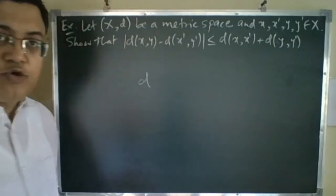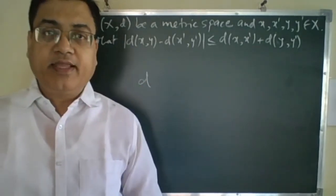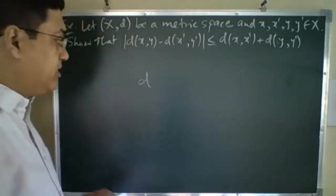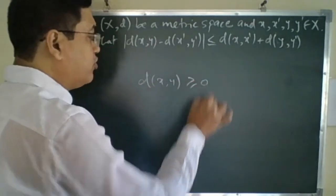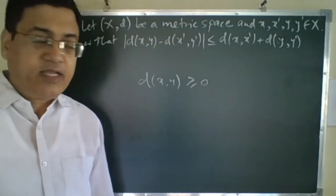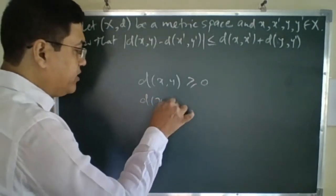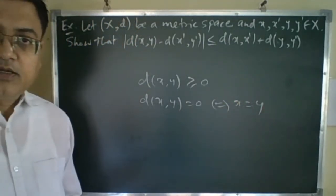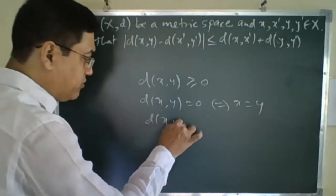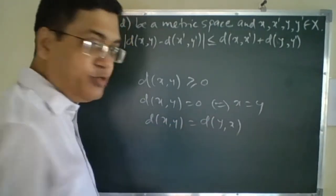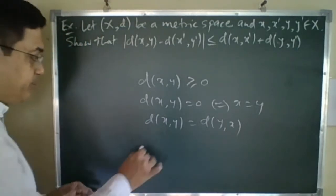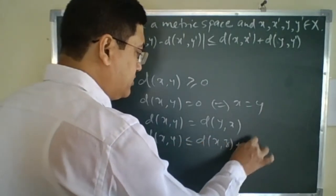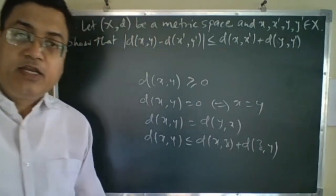A relation D is said to be a metric if it satisfies 4 properties. Number 1: non-negativity — D(x,y) ≥ 0 for any x,y belonging to X. Then D(x,y) = 0 if and only if x = y, that is the identity property. Third: D(x,y) = D(y,x), the symmetric property. And fourth: D(x,y) ≤ D(x,z) + D(z,y), the triangle inequality property.